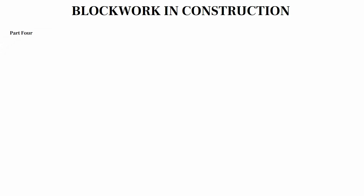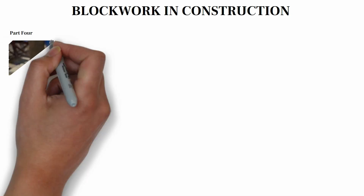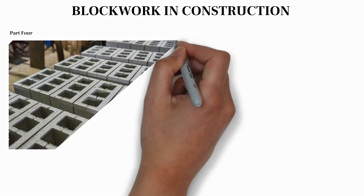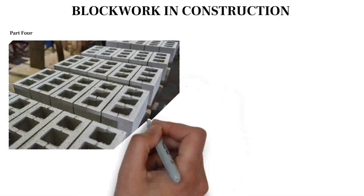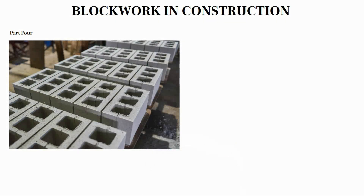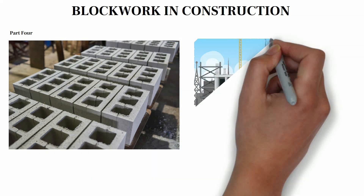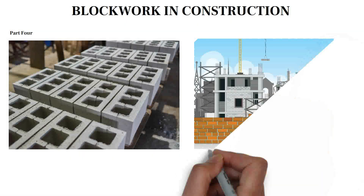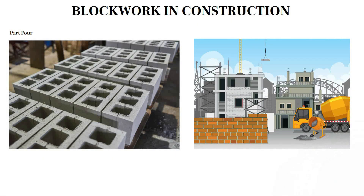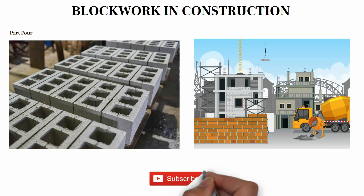Welcome to the fourth part of block work in construction. In this part, we will be calculating the unit rate of masonry work in construction, which comprises of material cost, labor cost, plant and equipment where applicable, plus agreed profit and overhead percentage by top executives of the company.